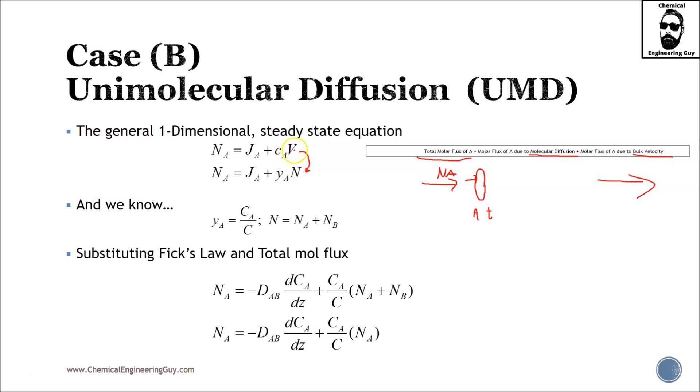If we don't have concentration of velocity, we can change this to molar fraction of A times the molar flux, total molar flux. In a binary case, you will have NA plus NB. And we know that the molar composition of A is concentration of A divided by concentration, and the total molar flux stated is here.